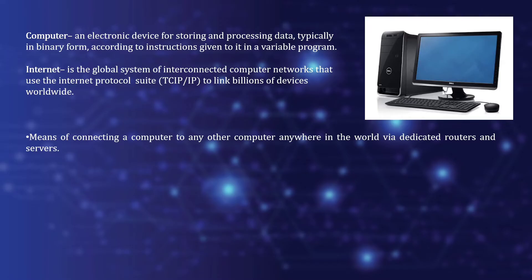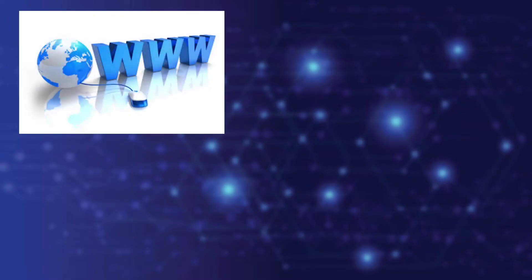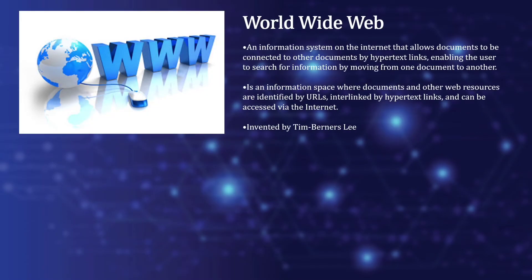The internet is also a means of connecting a computer to any other computer anywhere around the world via dedicated routers and servers. Sometimes called simply 'the net,' it is a worldwide system of computer networks — a network of networks — in which a user at any one computer can get information from any other computer. The WWW, also called the World Wide Web, is an information system on the internet that allows documents to be connected to other documents by hypertext links, enabling the user to search for information by moving from one document to another.